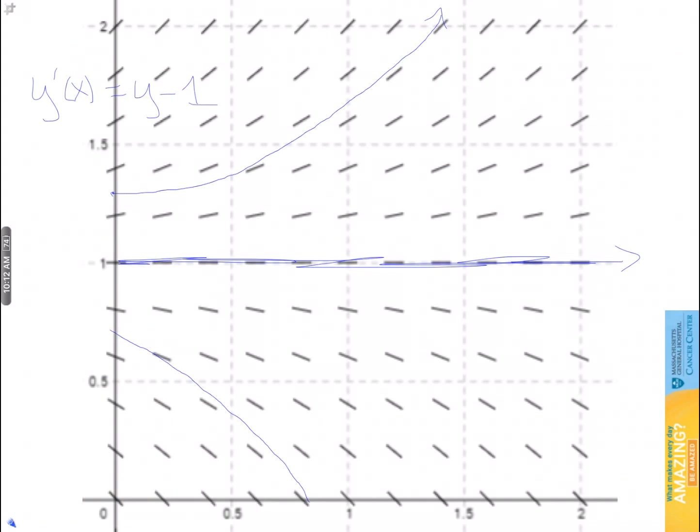Once you start at any given point inside the direction field, you follow the general slope of the lines and then you can get a solution.